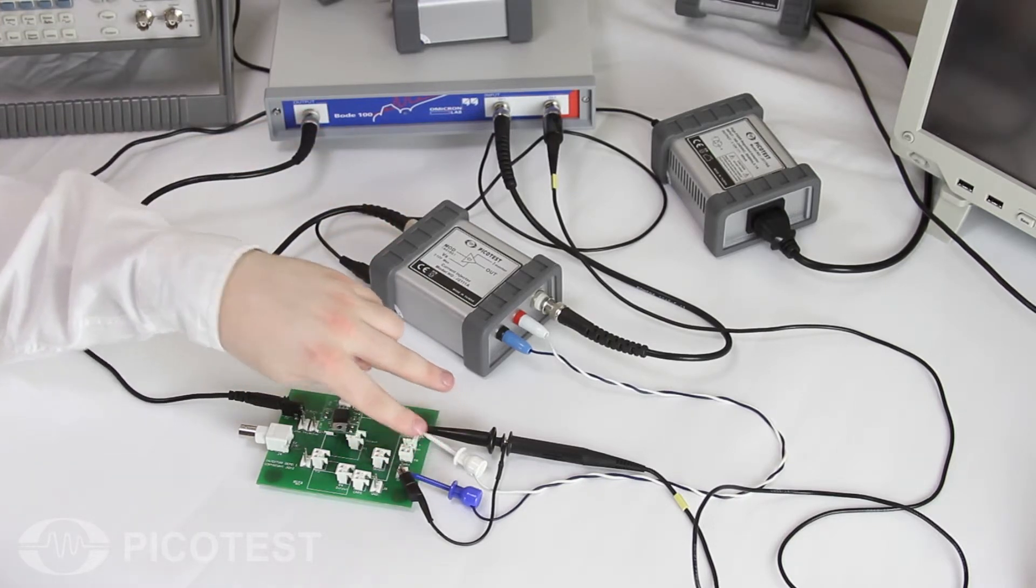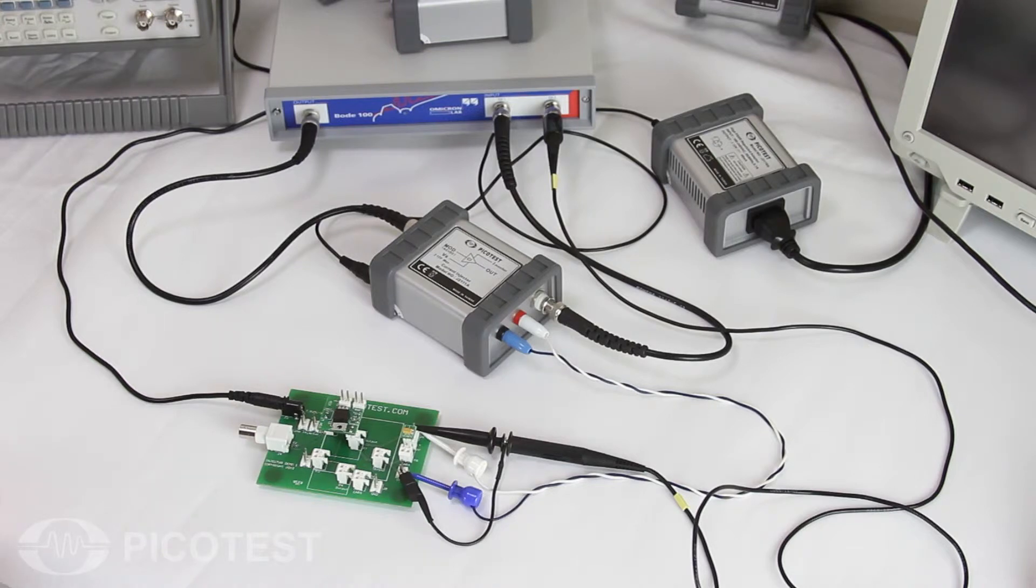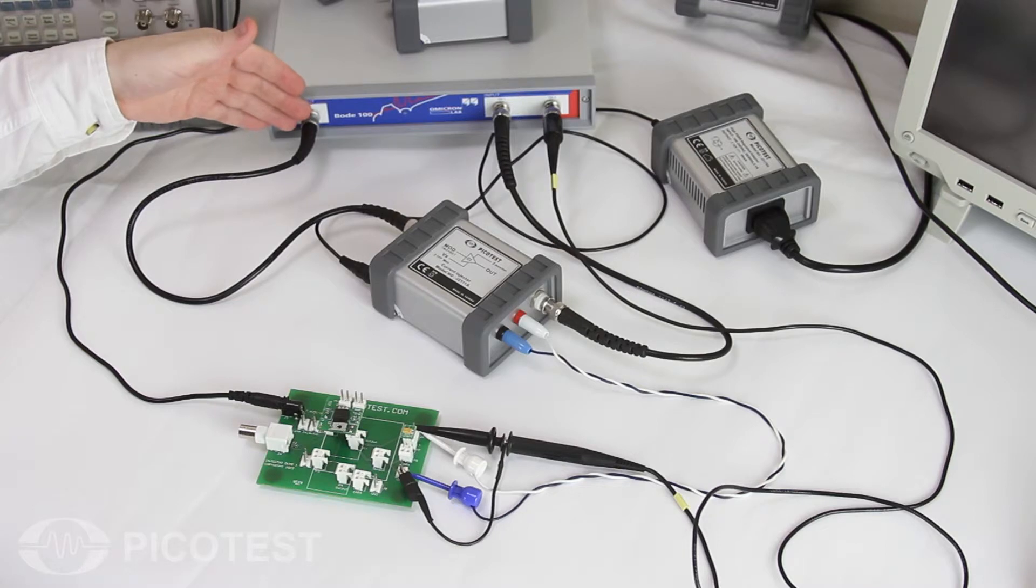The first is to apply a constant current load of the circuit. The second is to modulate the load with a small additional AC current. The current is controlled by the frequency swept output voltage from the Bode 100 network analyzer.